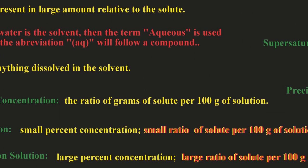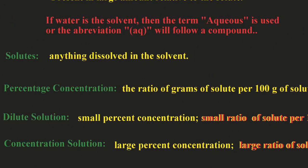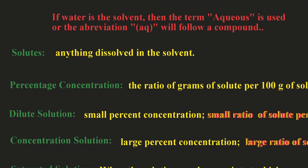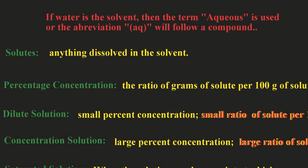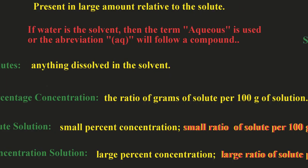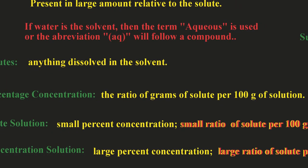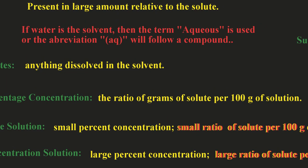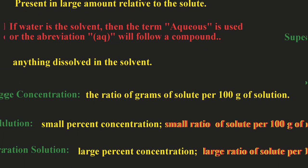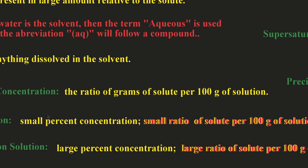Now we can look at different types of solutions. There's going to be a dilute versus a concentrated solution. So is the iced tea really strong or is it rather weak? If you barely put any tea in there it's a dilute solution and it's got a small percent concentration meaning there's a small ratio of solute in this case tea per hundred grams of solution of water in tea.